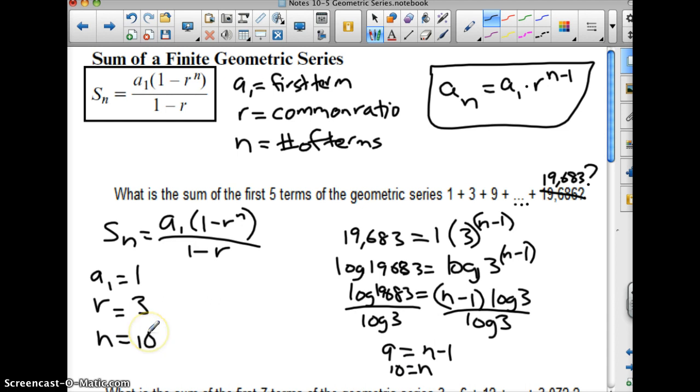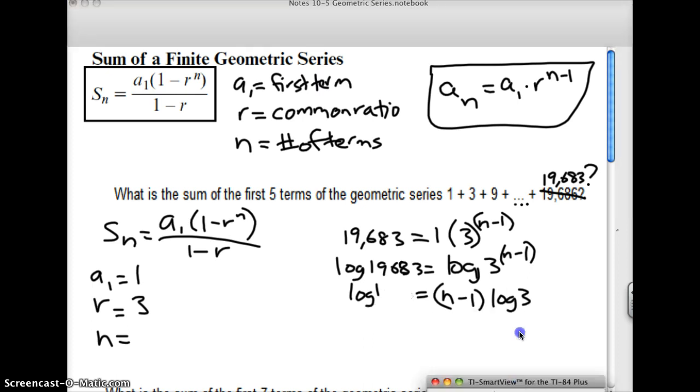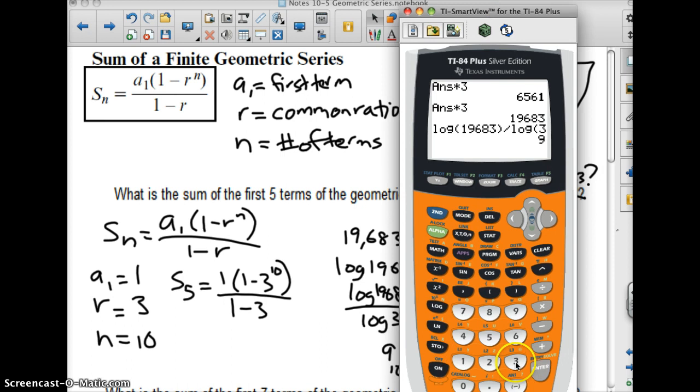So there I have everything I need to find this sum. Now, s sub 5 equals a1 is 1, times 1 minus 3 to the 10th, all over 1 minus 3. So 3 to the 10th, I'm going to use my calculator for that. I don't know what that exactly is. 3 raised to the 10th is 59,049.